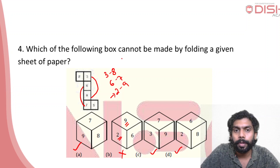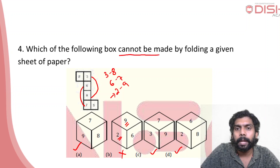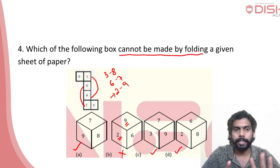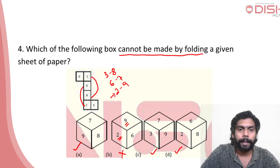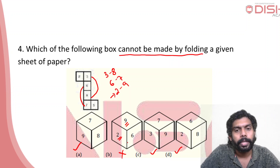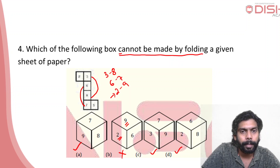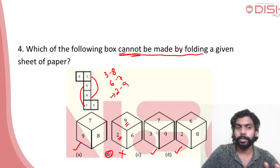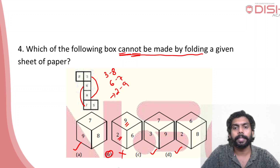Which of the following boxes cannot be made by folding a given sheet of paper? If you have been given a net and you open a box, there are options to check for both the folds. With 4 options given, you cannot make certain boxes. Use the concept carefully to determine which one cannot be formed.